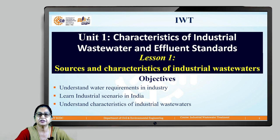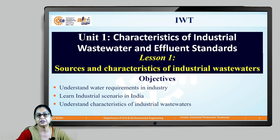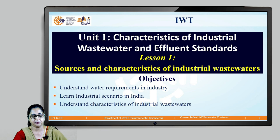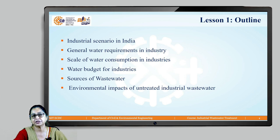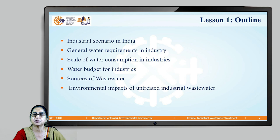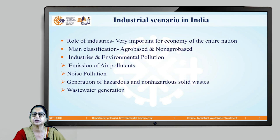We will start with Unit 1: Characteristics of Industrial Wastewater and Effluent Standards. The objectives of Lesson 1 are to understand water requirements in industry, to learn the industrial scenario in India, and to understand characteristics of industrial wastewater. The outline includes industrial scenario in India, general water requirements, scale of water consumption, water budget, and sources of wastewater along with environmental impacts.